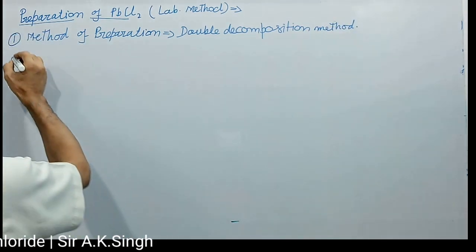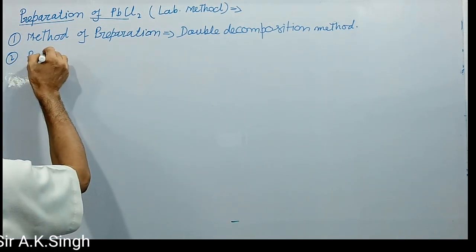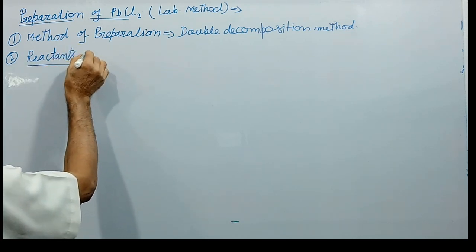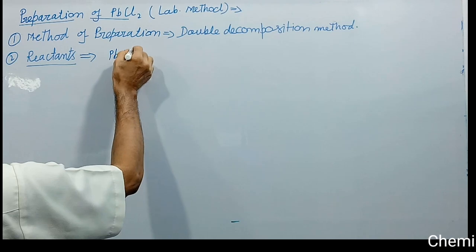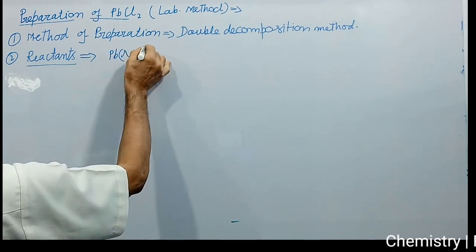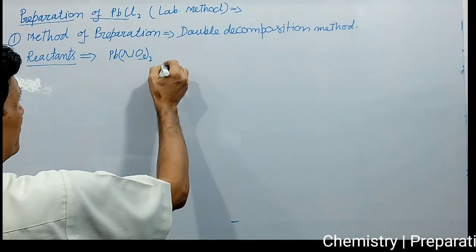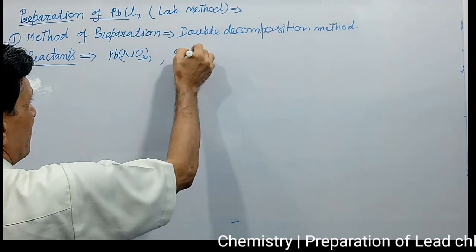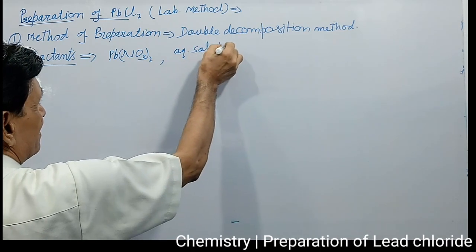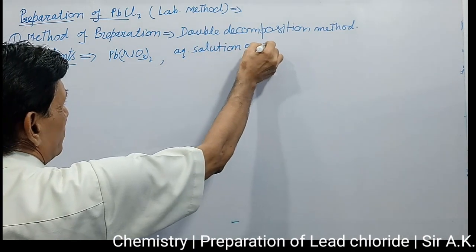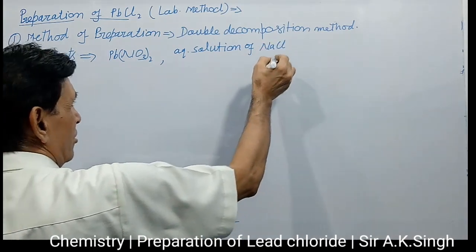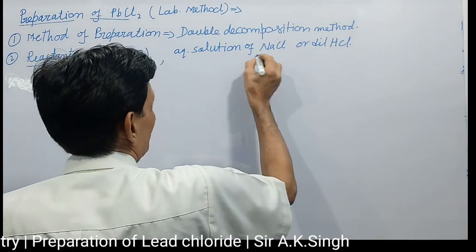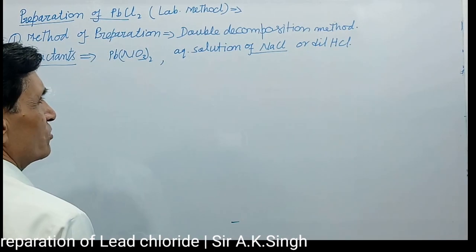Second point: what are the reactants required? Reactants required are lead nitrate crystals, needed to prepare an aqueous solution, and an aqueous solution of sodium chloride. Dilute HCl is also used, but I am going to tell you about sodium chloride.